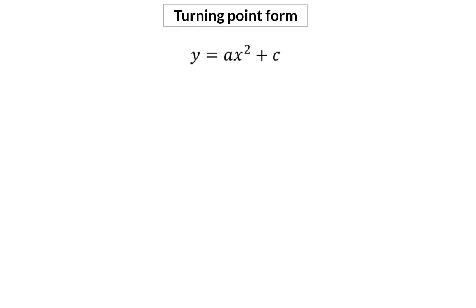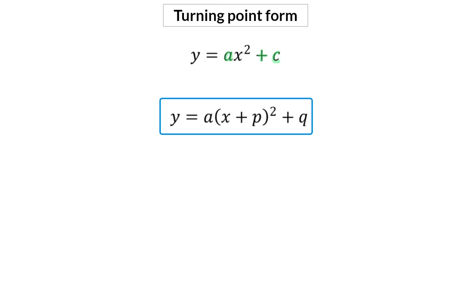In grade 10, we focus on the transformations indicated by the a value and the constant at the end of the equation. Now we're going to add another transformation by changing the equation as follows. The a value is still multiplied to x squared, the constant value is still added at the end and is now simply named q. The new transformation is the plus p that is added to the x, which is then squared.